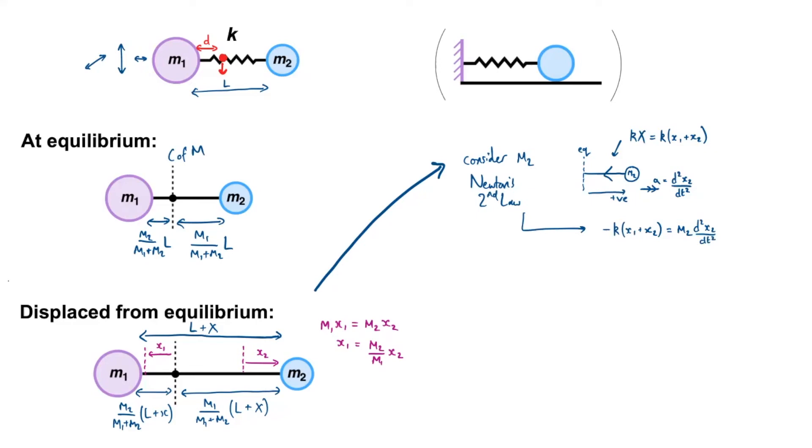At this point it's lucky that we have a relationship that tells us what x1 is in relation to x2. This will allow us to get the differential equation just in terms of one variable. So I can substitute in for x1 minus k, so x1 is m2 over m1 times by x2 plus x2 is equal to m2 times by the second derivative with respect to time of x2.